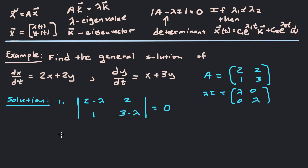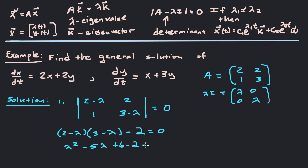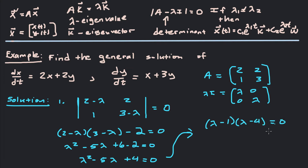Taking the determinant, we get (2 minus lambda)(3 minus lambda) minus 2 equals 0. Expanding and simplifying gives lambda squared minus 5 lambda plus 4 equals 0. That factors as (lambda minus 1)(lambda minus 4) equals 0, so lambda 1 equals 1 and lambda 2 equals 4. We now have our two eigenvalues.